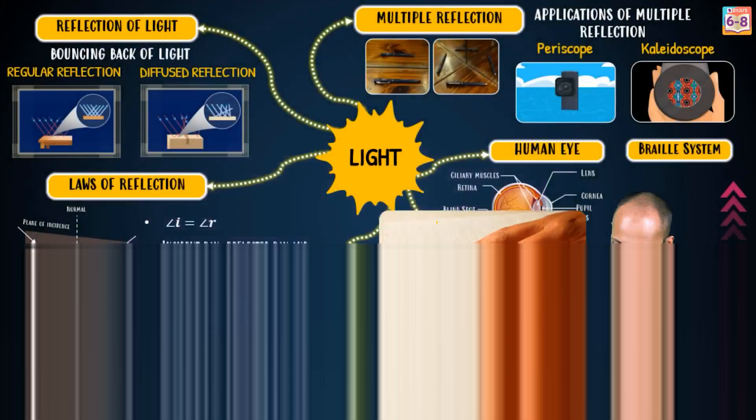Now look at this complete mind map — this is everything you need to learn in the light chapter. We've organized it topic-wise. I'll send you this mind map on Telegram. Take a printout and every two to three days look at this mind map and revise light: reflection of light, laws of reflection, image formation by plane mirrors, dispersion — just 5 to 10 minutes and you'll be revising light completely. Mind maps are best for revision.